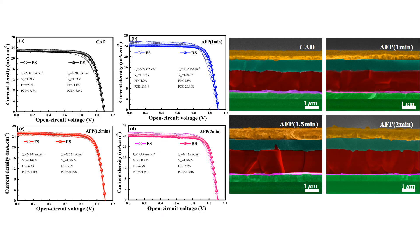Using those optimized thin film properties, we then fabricated devices. As shown in the schematic diagram, we measured the JV curves in both reverse and forward scan. The CAD-prepared devices achieved 18.6 percent efficiency, while after optimization with the fumigation process, the power conversion efficiency reached 21.45 percent.